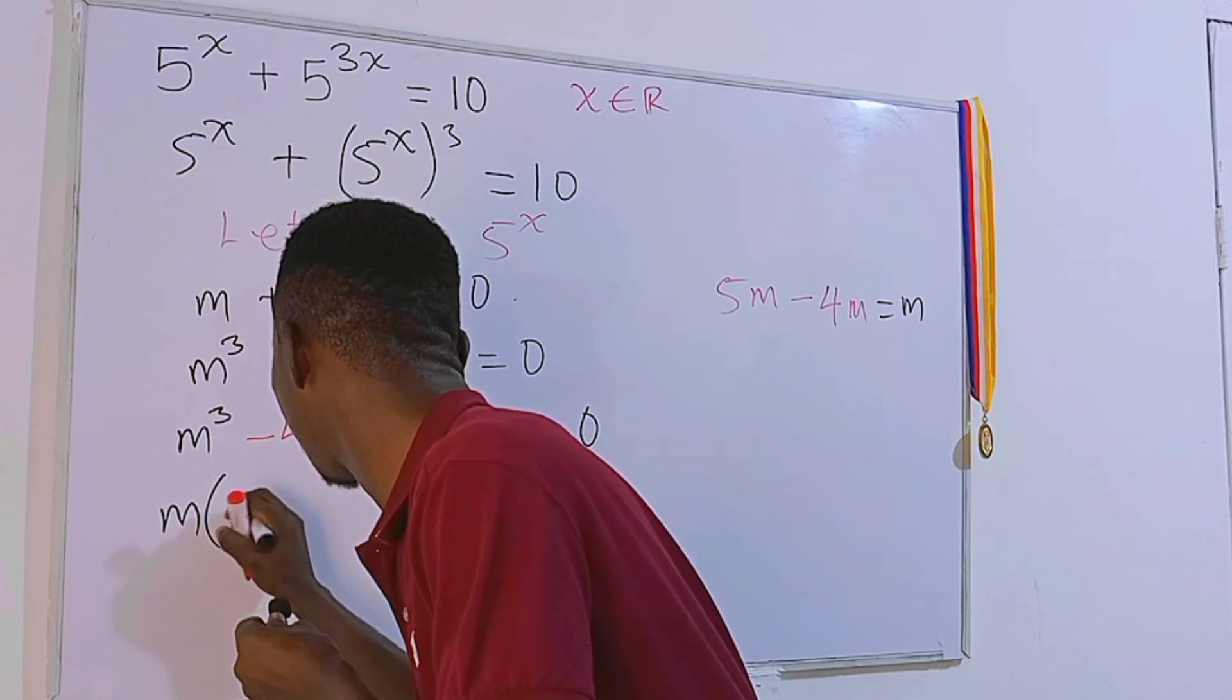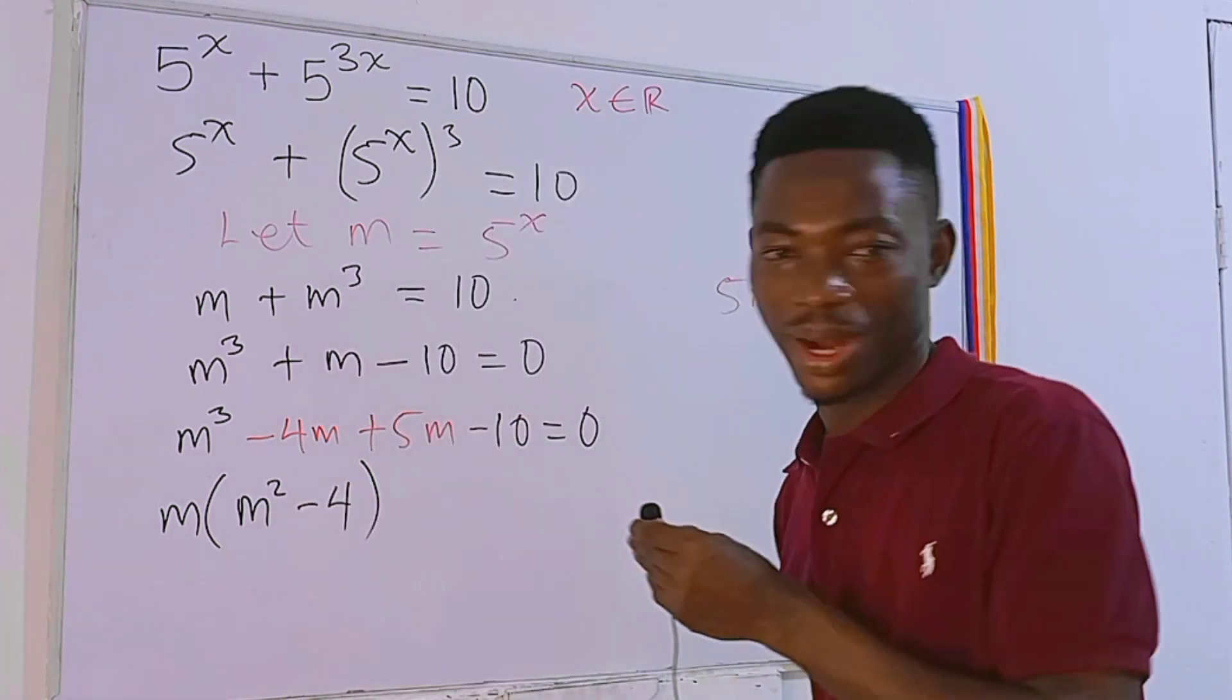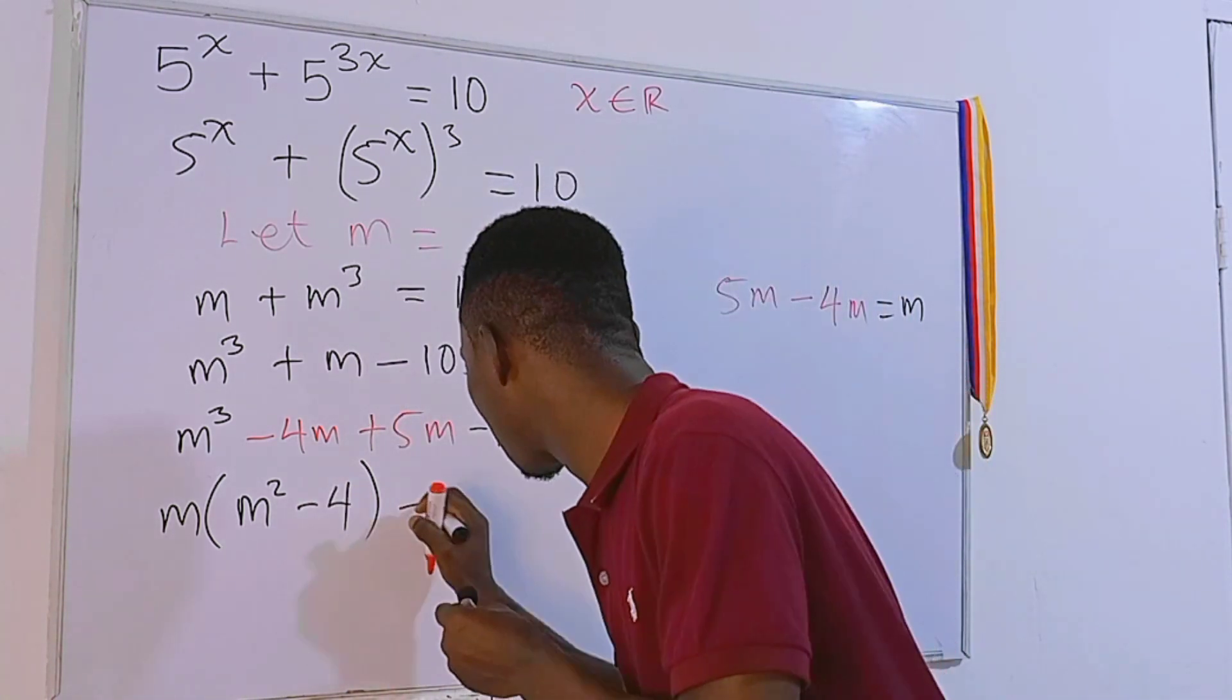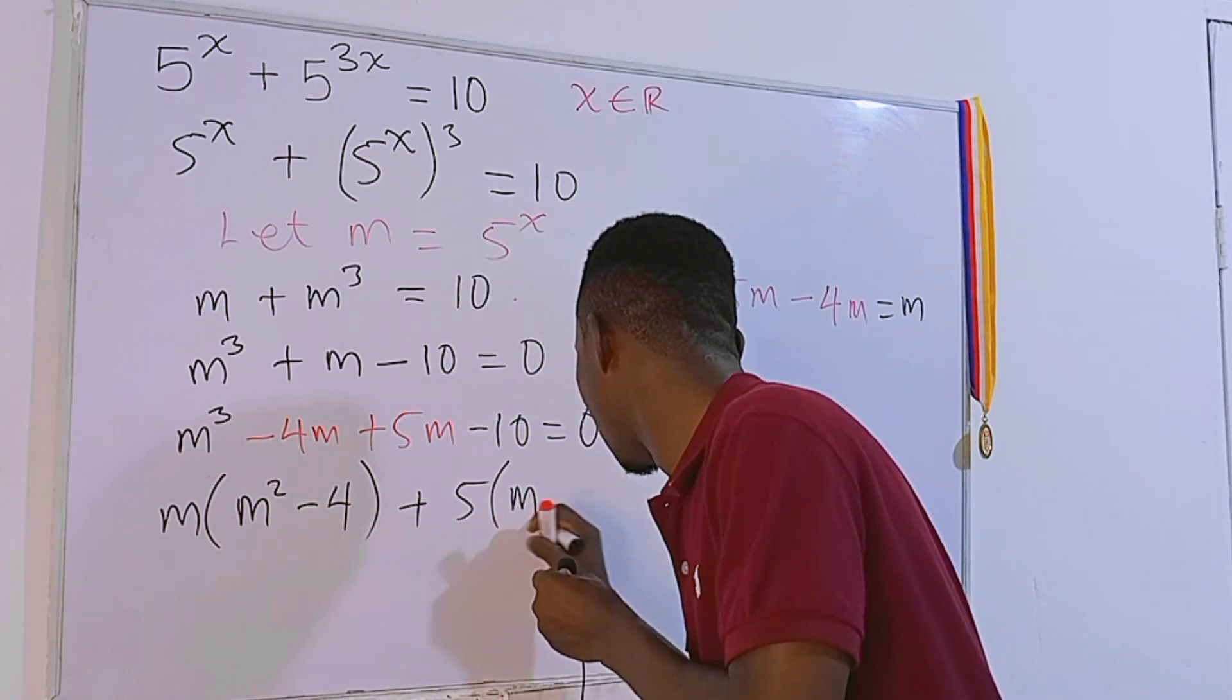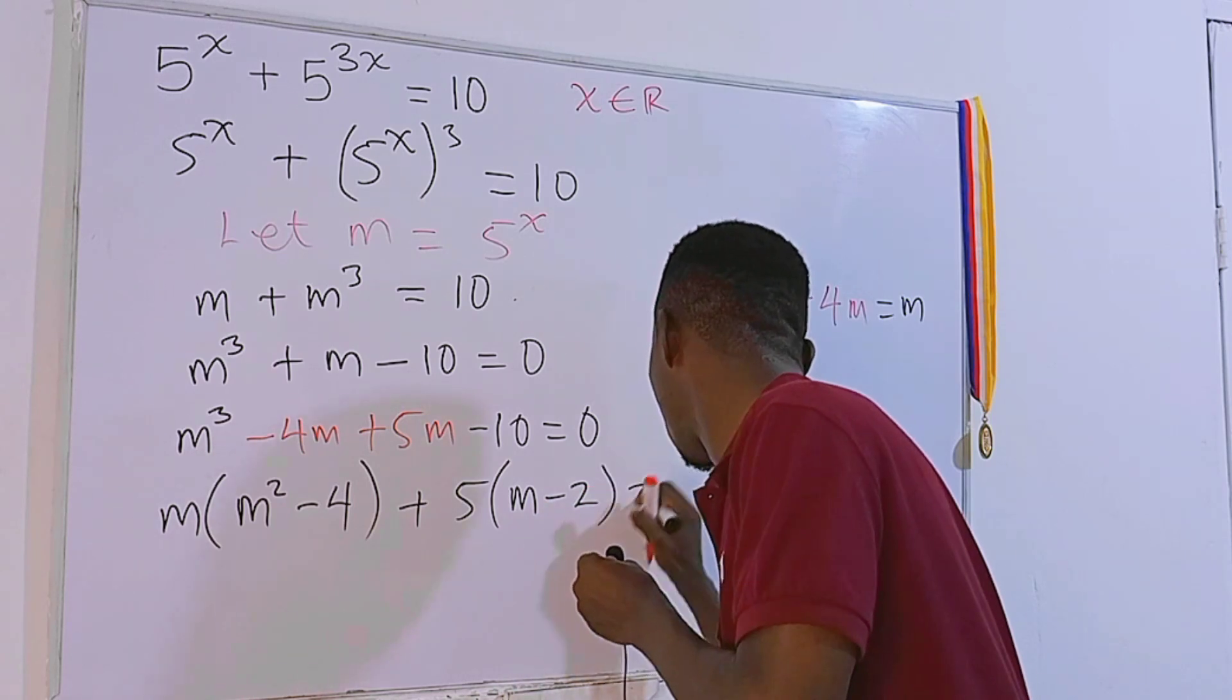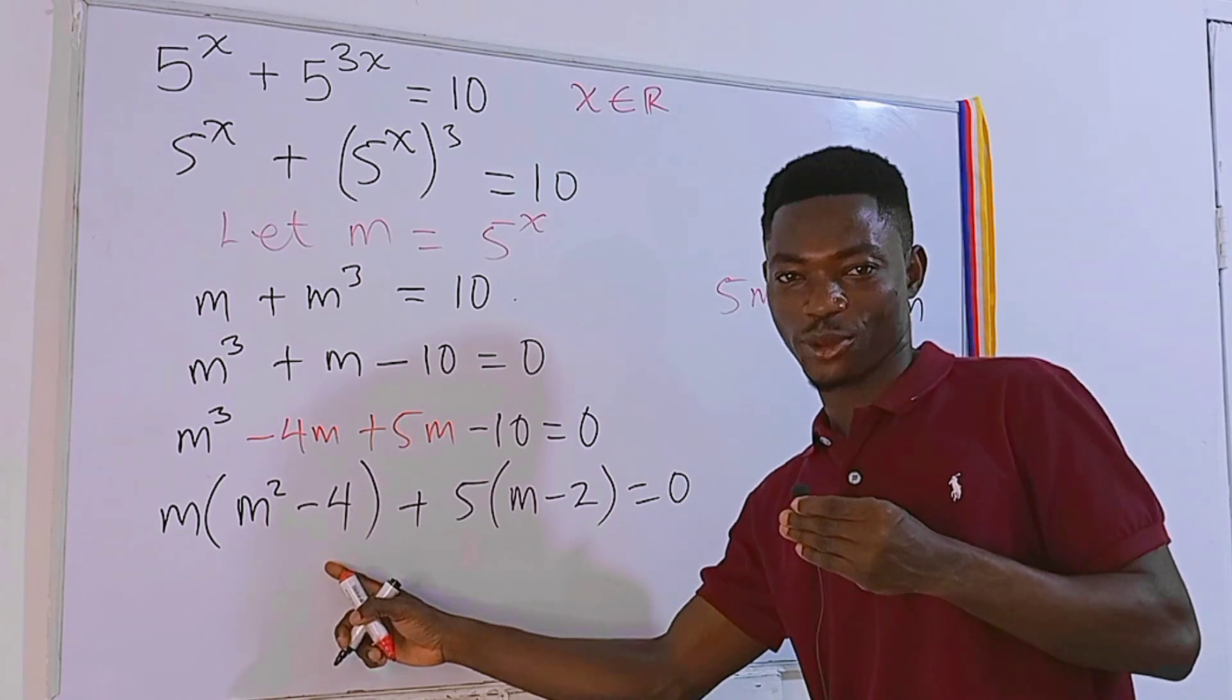From these two terms, clearly we can take m out so that we have m times (m² - 4), and I believe you are seeing what I'm seeing right here. Then plus, from these two terms, we can take 5 out, then inside we have m - 2, which is also 0.